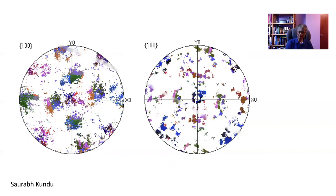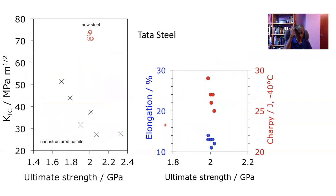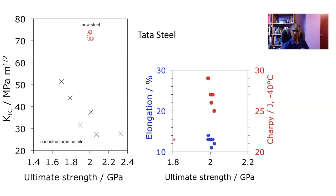A huge amount of work has been done on this alloy and Tata Steel has done many measurements of mechanical properties. Our new steel, at a strength level of more than two gigapascals, has a toughness of something like 75 megapascal root meters consistently. That is in contrast to the bulk nanostructured bainite, which has similar strength but much lower toughness. The Charpy toughness at minus 40 degrees centigrade is in the range 25 to 30 joules, and the elongation is something like 15%. This combination of mechanical properties is spectacular at a strength level of about 2 gigapascals.